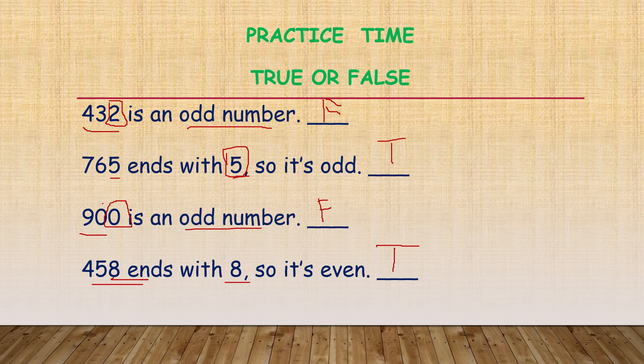What are the even numbers? 0, 2, 4, 6, or 8. What are the odd numbers? 1, 3, 5, 7, or 9.